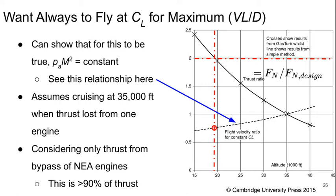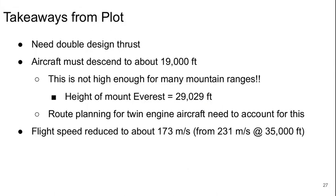What we see is that if we want to say, how much more thrust do we need? We need two times as much thrust. It tells us how far we have to move up this black curve, and then we can come straight down from there to find the altitude at which we have to be able to fly in order to achieve that. So we need to double our design thrust, which means our aircraft has to descend from 35,000 feet to about 19,000 feet. That is not high enough to get over lots of mountain ranges. The height of Mount Everest and the Himalayas, for example, is just over 29,000 feet. This means that flight route planning for twin engine aircraft actually have to account for the height of the terrain. You also have to fly slower. The flight speed is reduced from about 231 meters per second to about 173 meters per second.